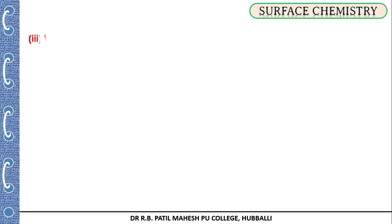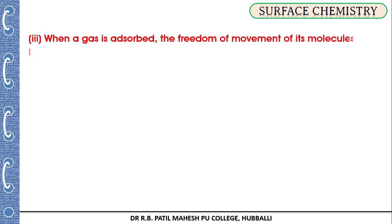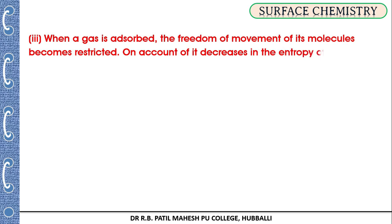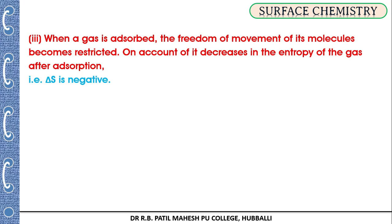When adsorption takes place, gas molecules are adsorbed on the surface, so the freedom of movement of gas molecules becomes restricted — they cannot move freely. As a result, entropy decreases. Since final entropy is less than initial entropy, ΔS is negative. So always remember: during adsorption, ΔG is negative, ΔH is negative, and ΔS is negative.